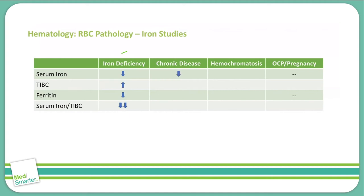For chronic disease, you're going to see the serum iron decreased. The total iron binding capacity is also decreased. The ferritin, or the storage in the body, will be increased — the body is trying to store more iron for use in that chronic disease. And your serum iron over total iron binding capacity ratio will be decreased as well.